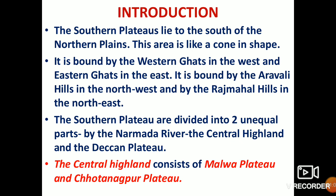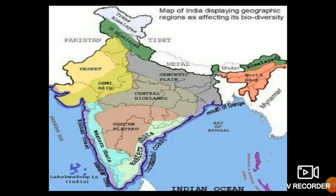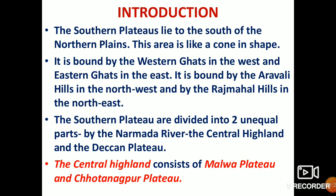The Southern Plateau is divided into two unequal parts by the Narmada River. The two parts are the Central Highland and the Deccan Plateau, with the Narmada River flowing between them.